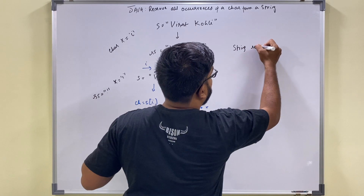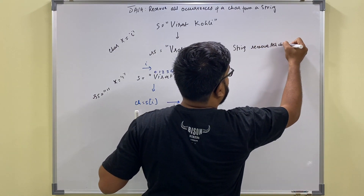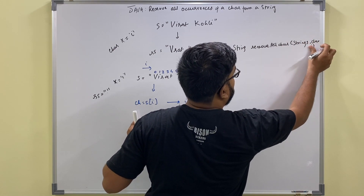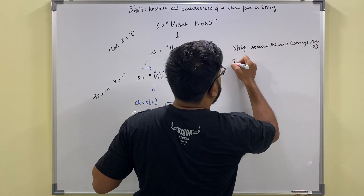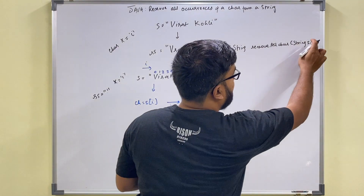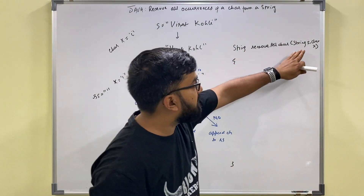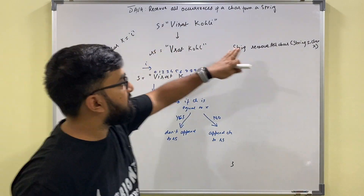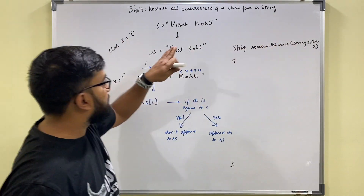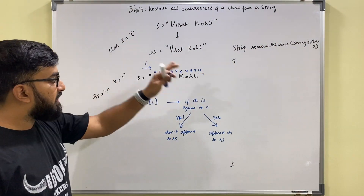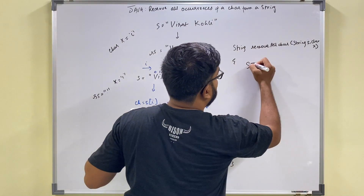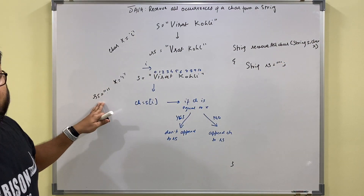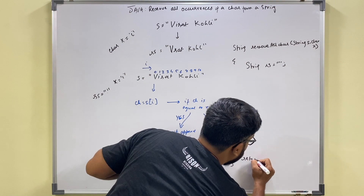So I am going to write a method: remove all char from string S and character X. This method takes a string S and a character X, and it returns a string. The returned string is basically string S with all occurrences of character X removed. We get S and X as inputs, and this is the returned value. In our algorithm we start with RS as blank, and RS is the value we finally return.